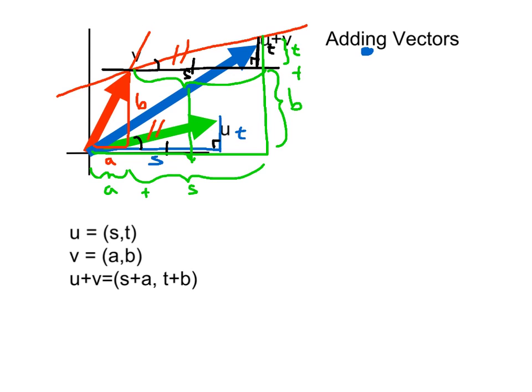So that shows that the coordinates of u plus v are a plus s, or s plus a right here on this side, and t plus b on this side. So the parallelogram method of adding vectors gives us an equivalent algebraic definition of adding vectors, and they are the same.